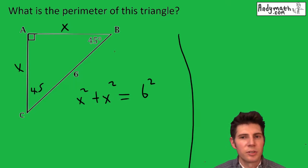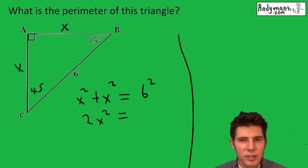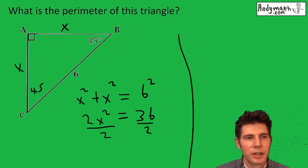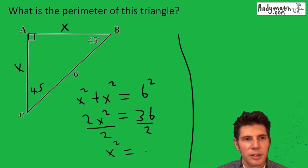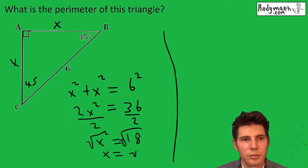And then this becomes 2x squared equals six squared, which is 36. The reason there's two x squared is because there's two of them: x squared and x squared. Divide both sides by two and we get x squared equals 18. Square root both sides and we get x equals root 18.